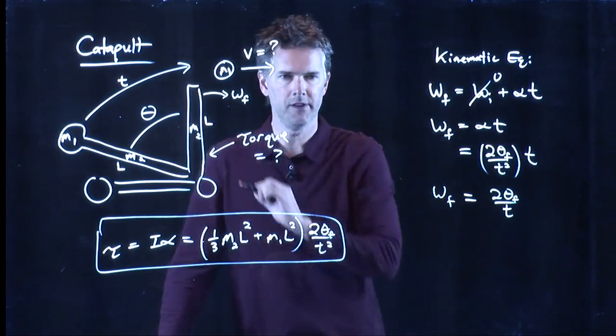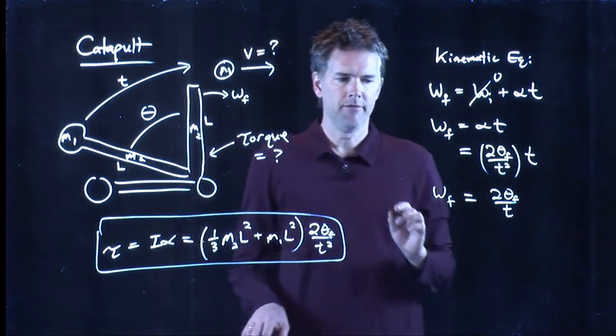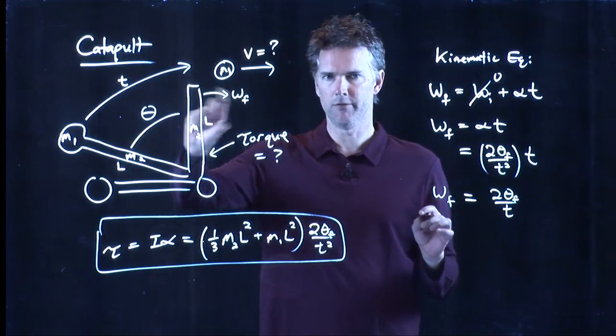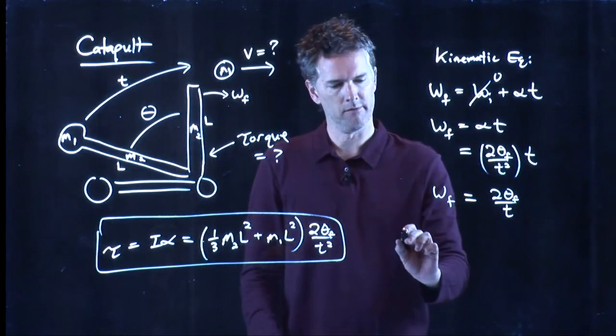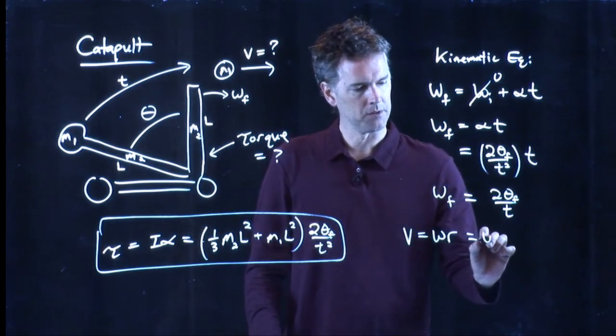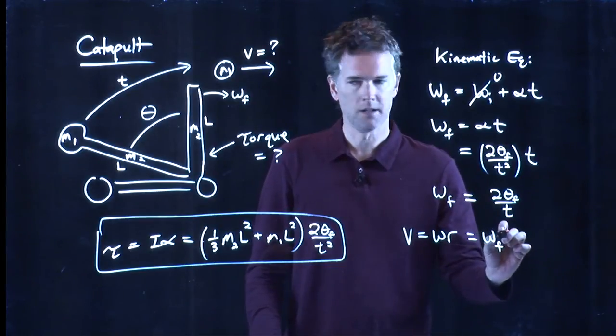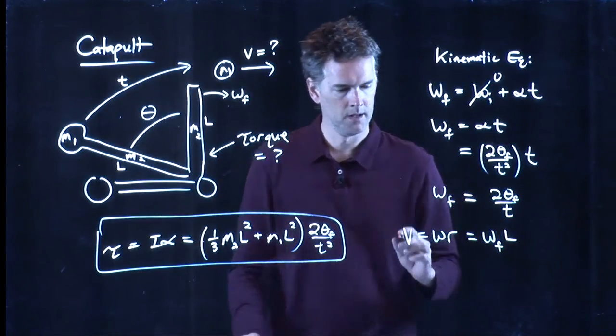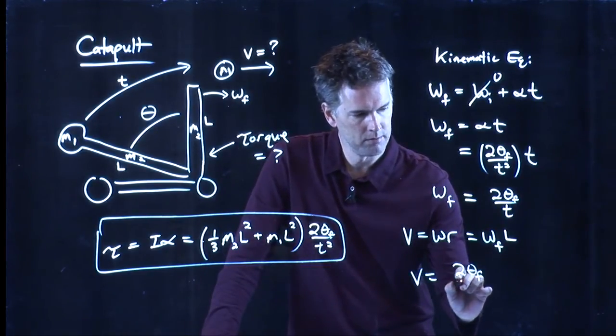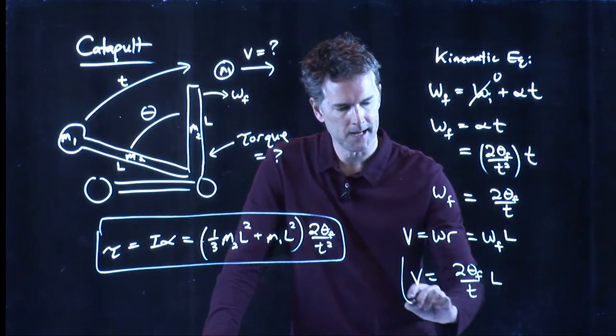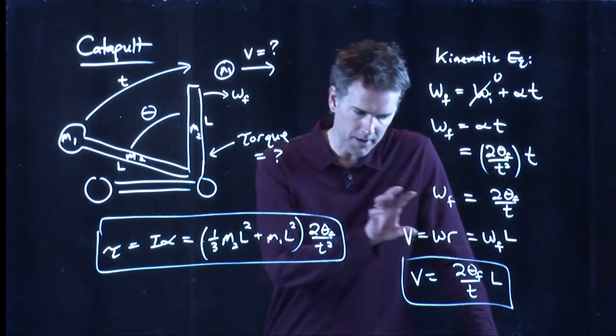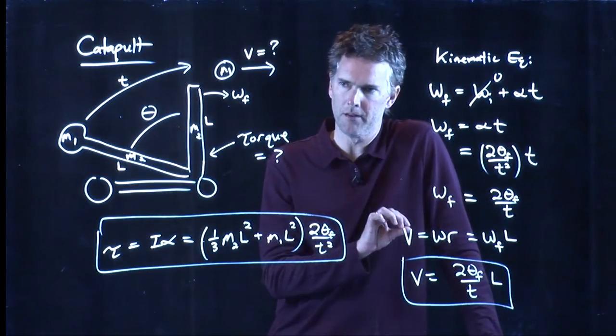What we're looking for is v. And v relates to omega by the radius. How far are you from the axis of rotation? V is equal to omega times r. So in this case, it's going to be omega final times l. And we get 2 theta f over t, all of that times l. And now if you have all those numbers, you can plug it in and calculate what the final speed of the cannonball is.